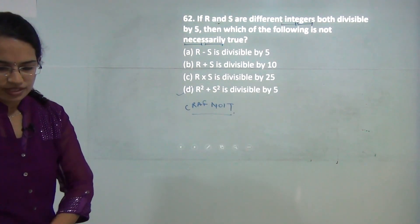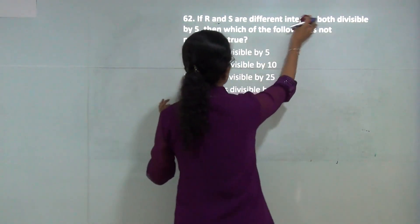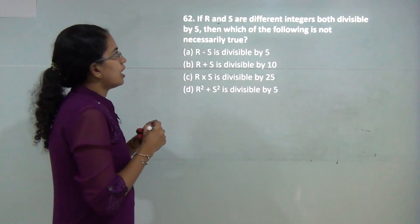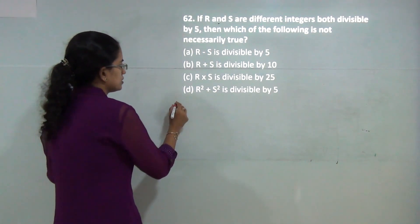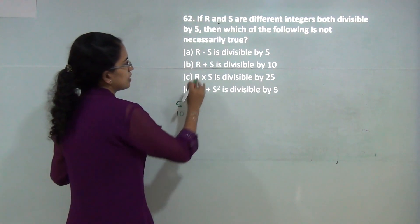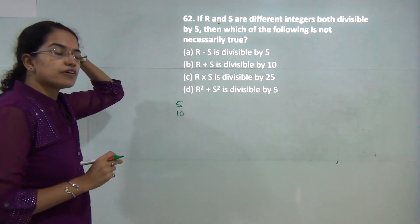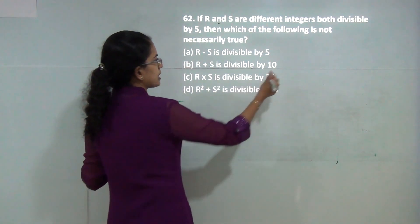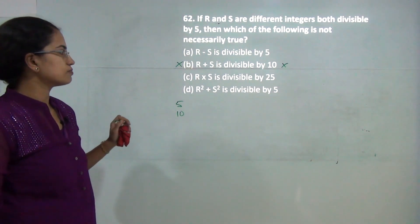This is a divisibility and LCM problem. Let R and S be 5 and 10. If 10 minus 5 equals 5, it's divisible by 5, which is true. However, 10 plus 5 equals 15, which is not divisible by 10. So B is the incorrect option.